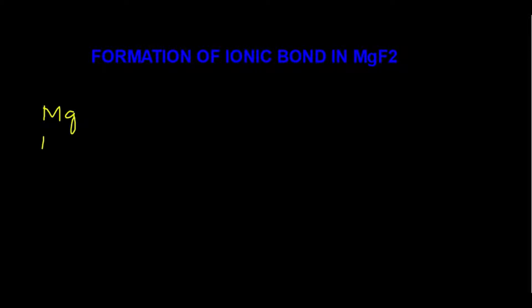Now we will see how ionic bond is formed in magnesium fluoride. First, we write the electronic configuration of magnesium. Atomic number of magnesium is 12. Its electronic configuration is: K shell — 2 electrons, L shell — 8 electrons, M shell — 2 electrons. M is the valence shell of magnesium with 2 valence electrons. Since it has less than 3 electrons in the valence shell, it tends to lose electrons in a chemical reaction to gain stability.